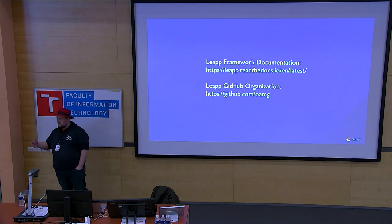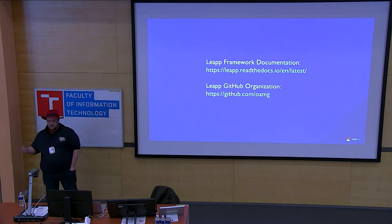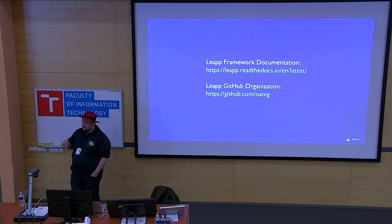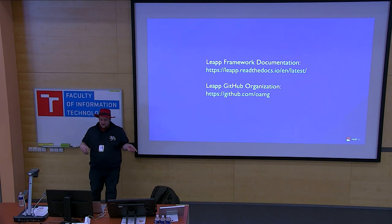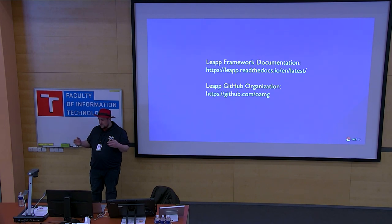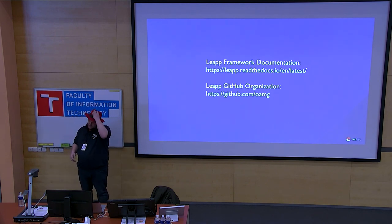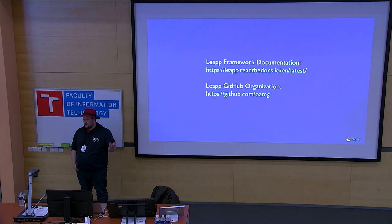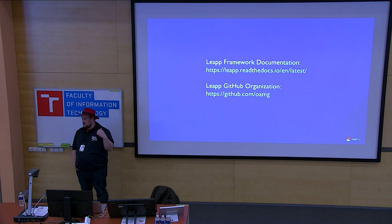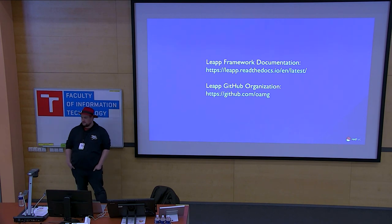Q: How does actor ordering work within a phase? A: Obviously phase ordering is not a problem, but actors within a phase can both send and consume messages, so we need to resolve the order. What we use is topological sort — any producer is executed first before anything that consumes its output. So within a phase, if anyone produces something that the same phase consumes, the producer runs first. And no actor can both produce and consume the same message type. Thank you very much.